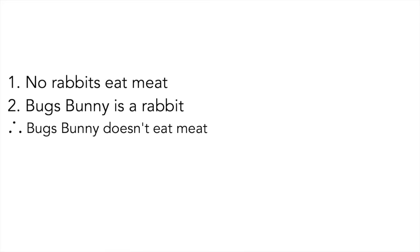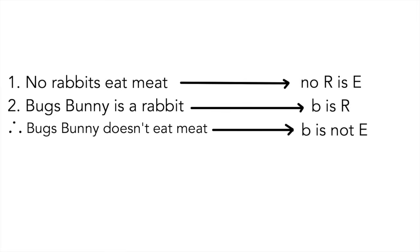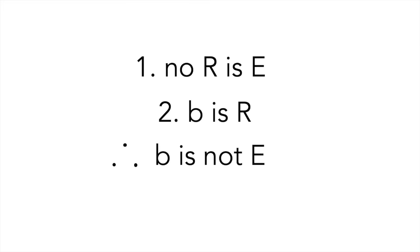So, let's start by converting this argument on the left into a syllogism using woofs. No rabbits eat meat. Bugs Bunny is a rabbit. Therefore, Bugs Bunny doesn't eat meat. For the first part, we could translate this into no R is E, with R representing rabbits, and E representing eat meat. Remember, we capitalize both because this woof starts with a word. Next, we can translate the second part into B is R, with B for Bugs Bunny being lowercase because this woof begins with a letter, and R for rabbit being uppercase because it is a general term. Finally, we could translate this conclusion into B is not E. Alright, nice job guys. We have our syllogism.